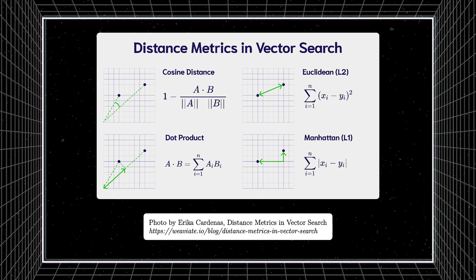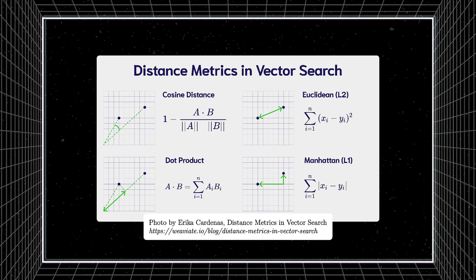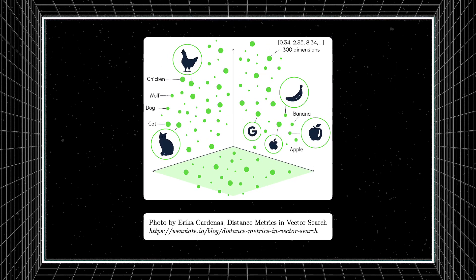Vector search involves taking a new input, converting it to an embedding using our model, and then comparing it to all existing embeddings in our database. The ultimate power of vector search lies in leveraging these powerful models that can capture context in numerical data, allowing for strong search results that don't rely on keywords or phrase matching, but rather semantic similarity.